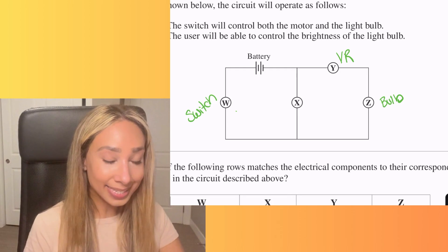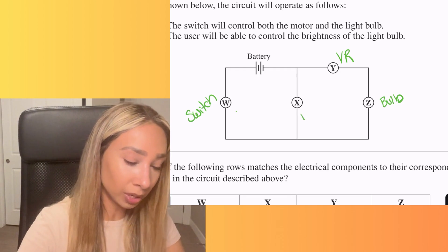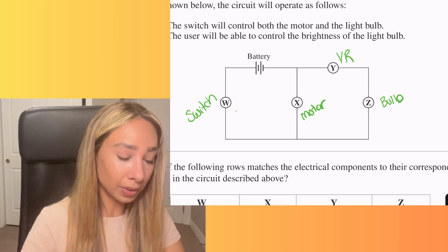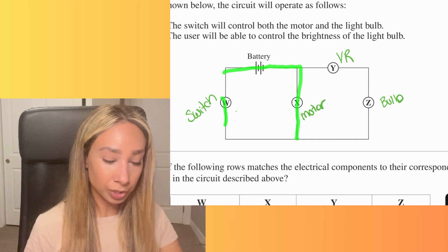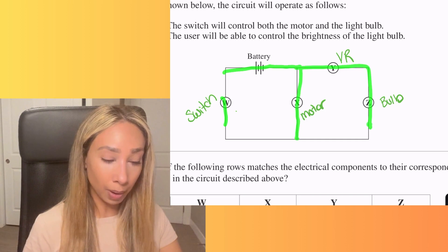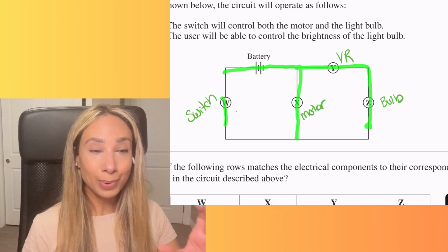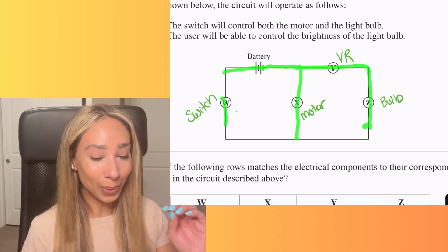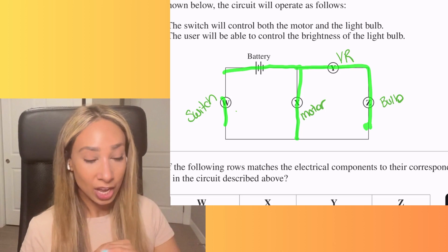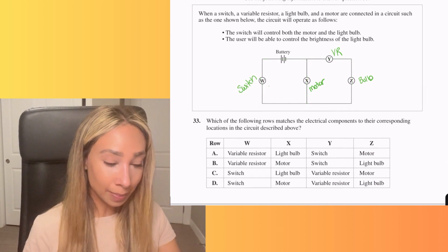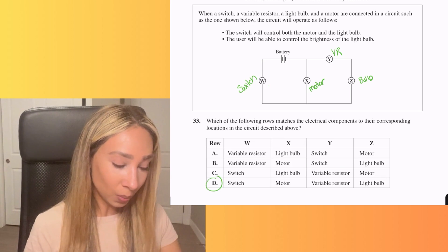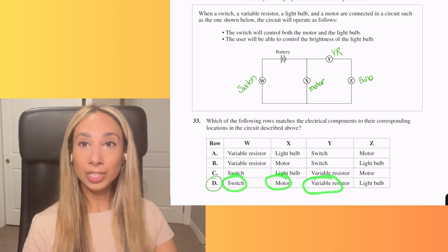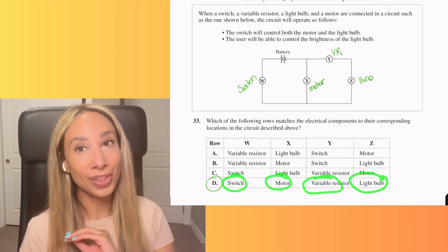And then with X, well, X is the only thing that's left over, which is our motor. And if we also think about this, as our switch is turned on, that's going to allow the electrons to flow to turn the motor on as well as the bulb. So the switch is able to control both the motor and the bulb. So if you look at our options to fit this, the only one that's going to fit will be option D where we've got our switch motor variable resistor and light bulb all in the order that I just mentioned.